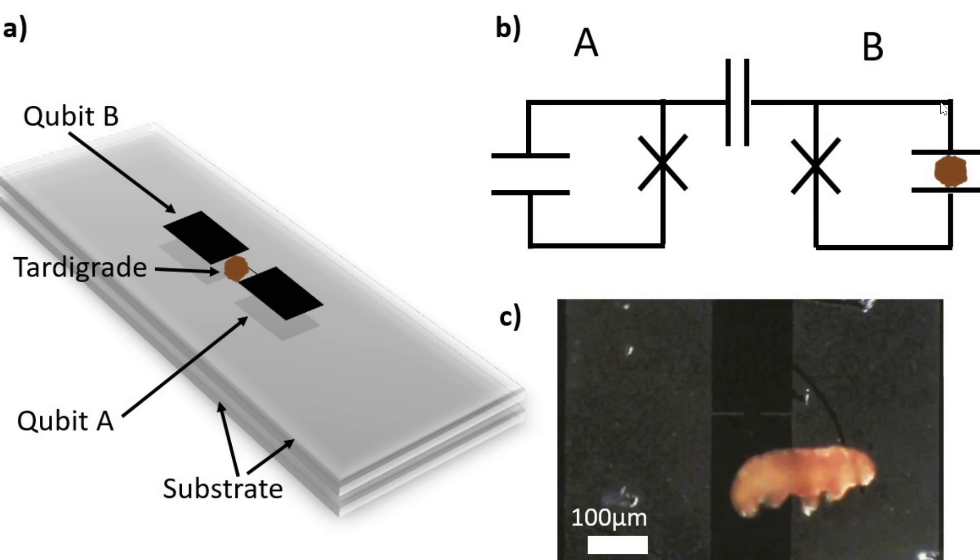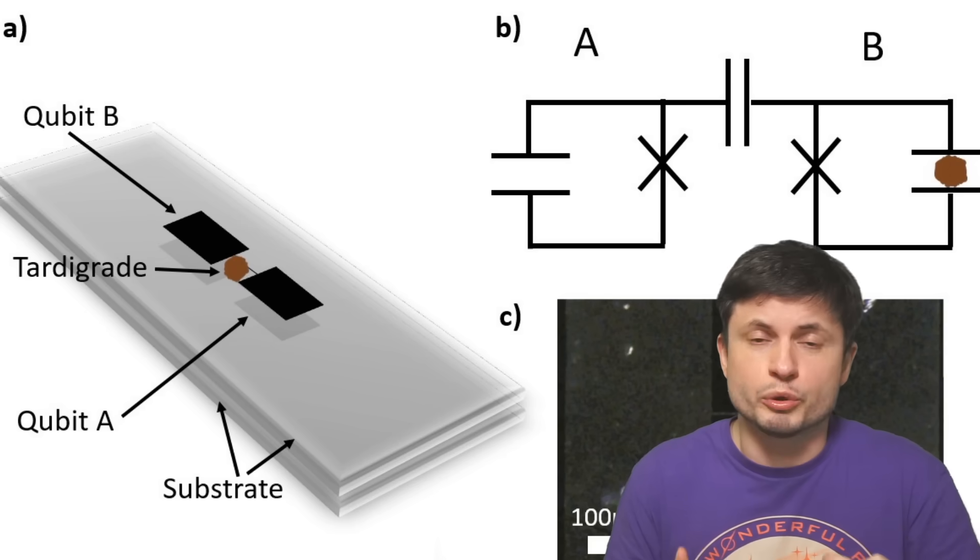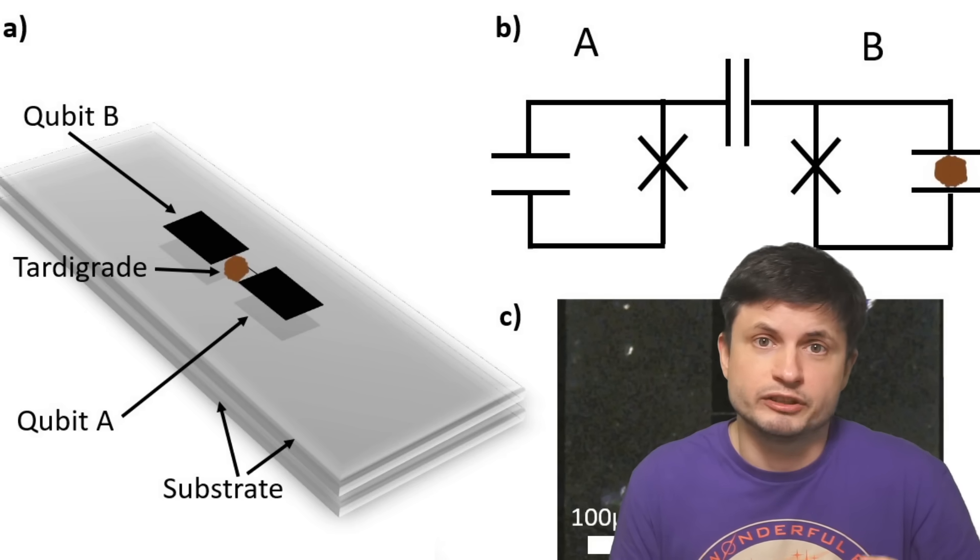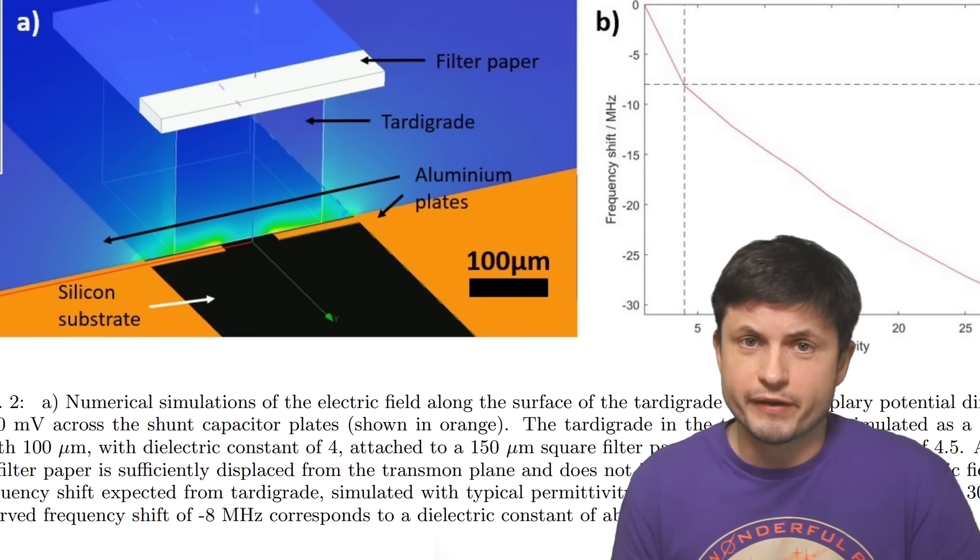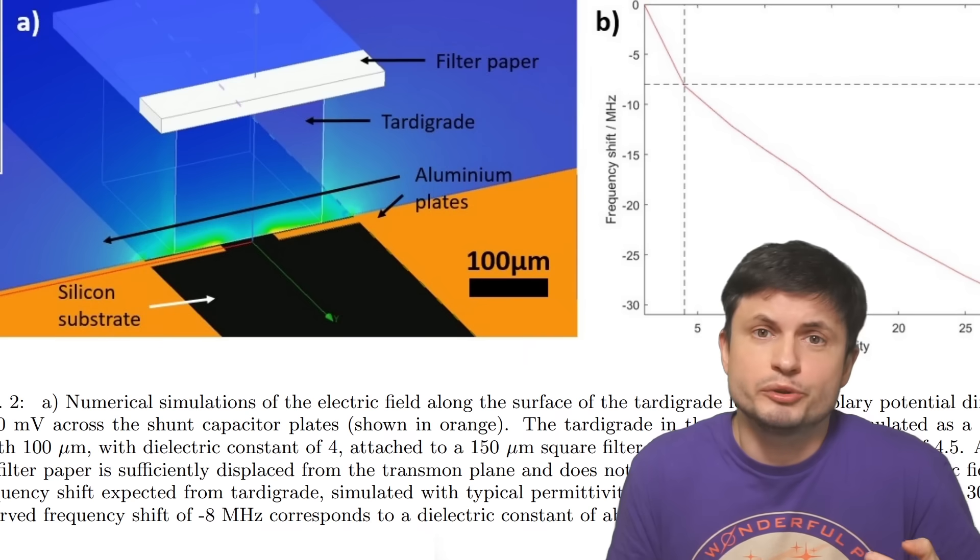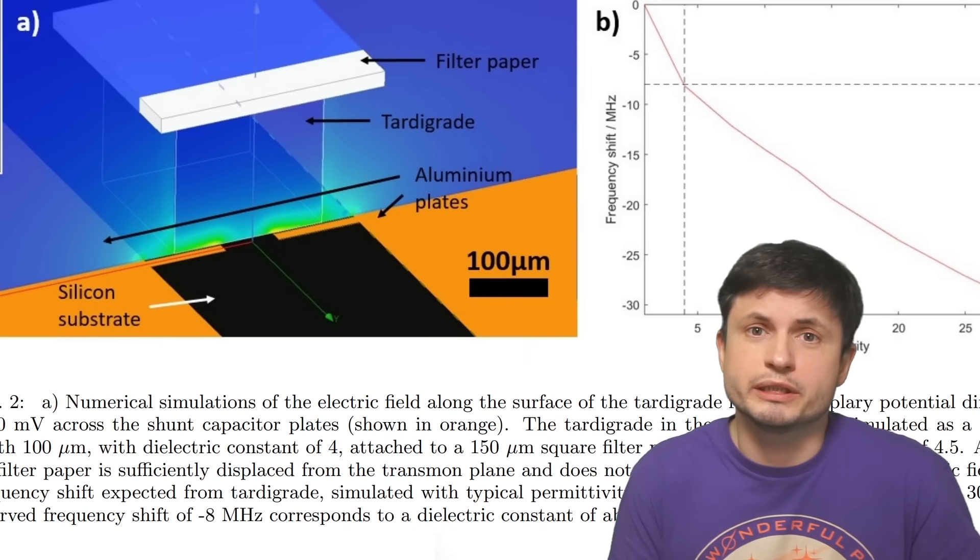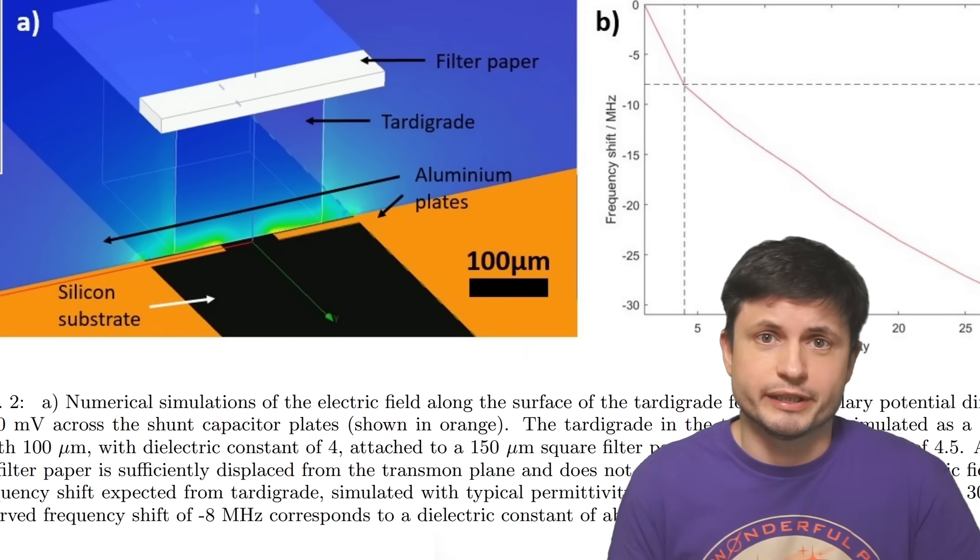They then took both qubit B and tardigrade and were able to couple it to qubit A that's visible right here, making these quantum bits essentially entangled and dependent on one another. And then when the frequency of one of the qubits was affected, the entire system seems to have been affected as well, including the tardigrade, at least to some extent.